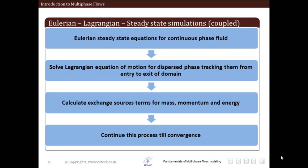Once we have solved the steady-state equation for the continuous phase, we solve the Lagrangian equation of motion for the dispersed phase and track them from entry to exit — meaning we solve the entire steady-state trajectory of the dispersed phase. We use Newton's law of motion and solve the continuous trajectory from entry to exit of the domain.